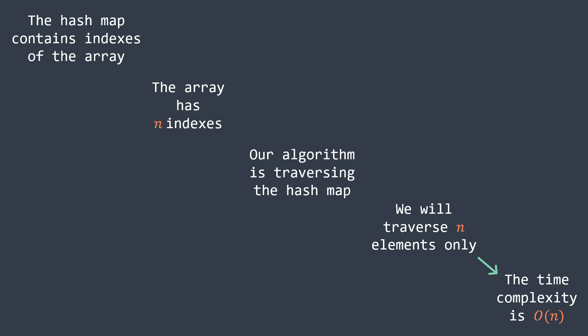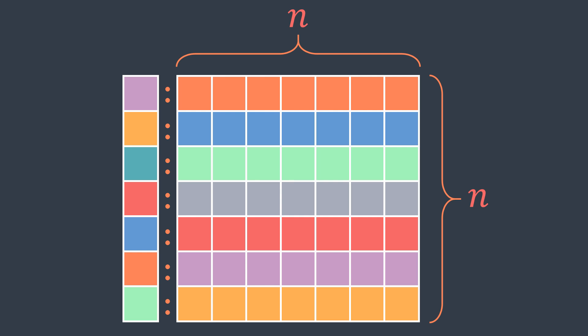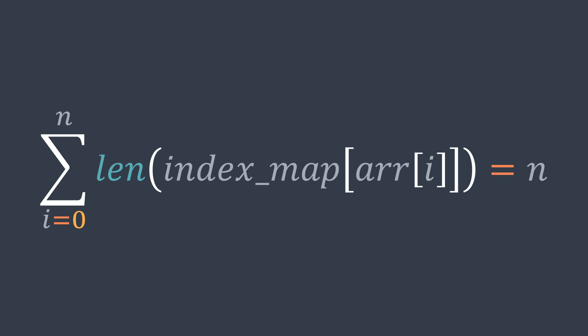To get O(n²), the hash map would have to look something like this, which is impossible because we have n indexes only. No matter the values in the array, the hash map will always contain n elements in total. So even if we are using nested loops, the number of iterations will be n, not n squared.